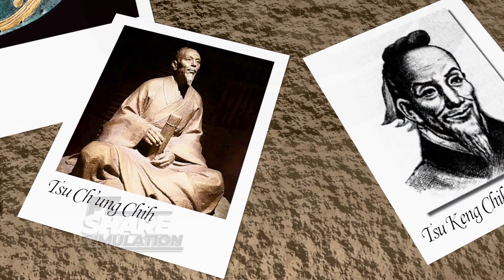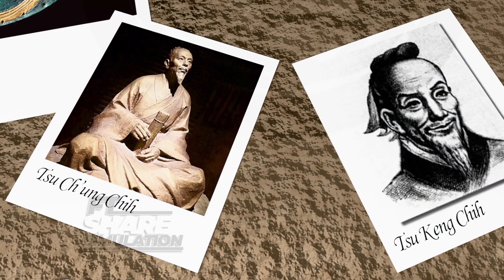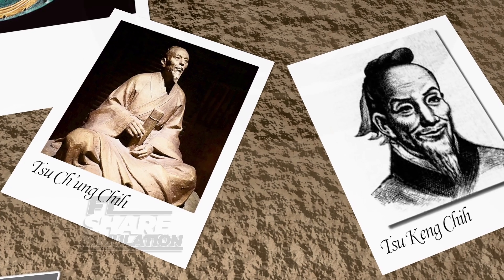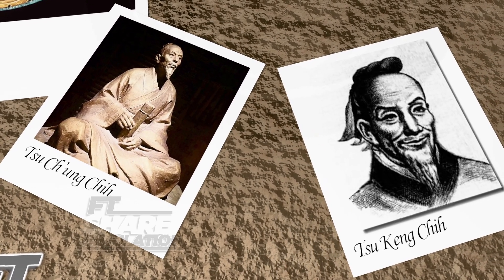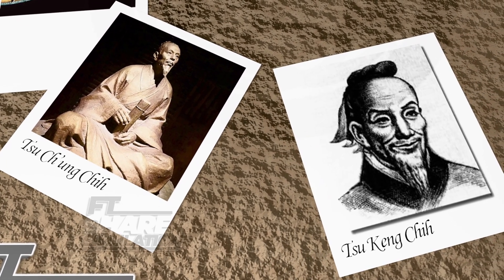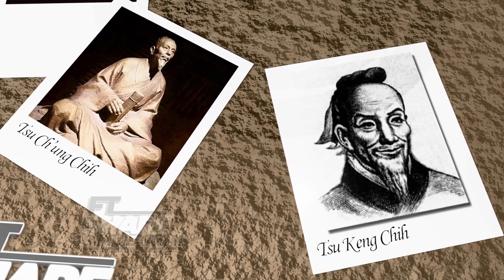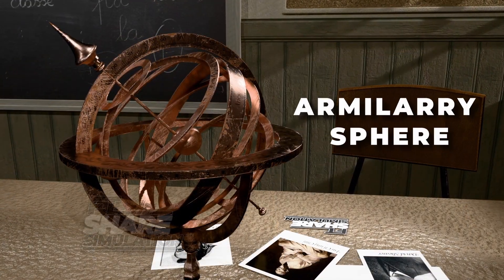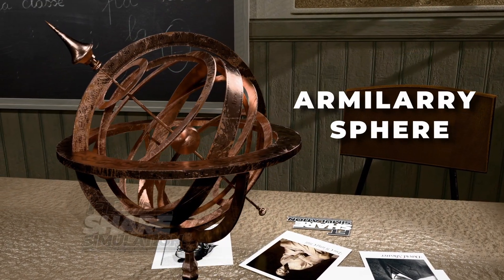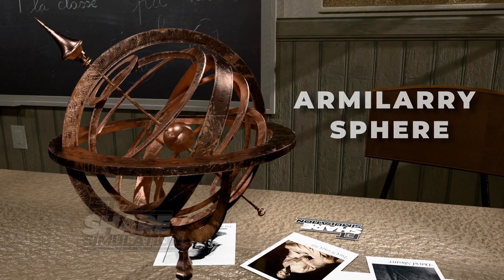The inventors of this mechanism were Su Chung-chi and Su Kang-chi, mathematicians and engineers from China during the 5th century. This mechanism was used in astronomical devices such as the armillary sphere, to track the positions of stars and planets.